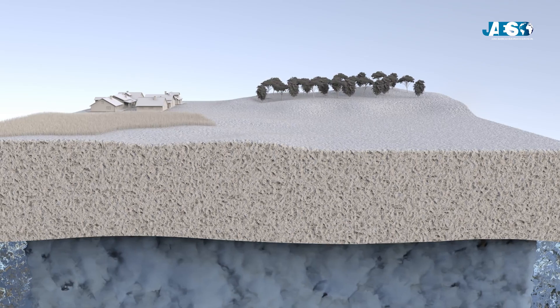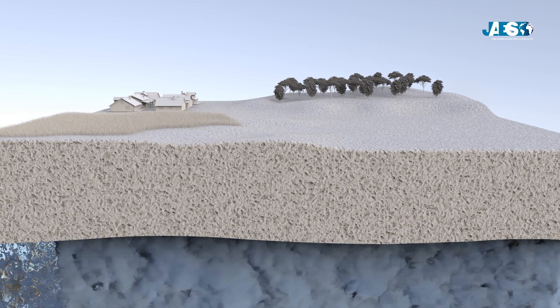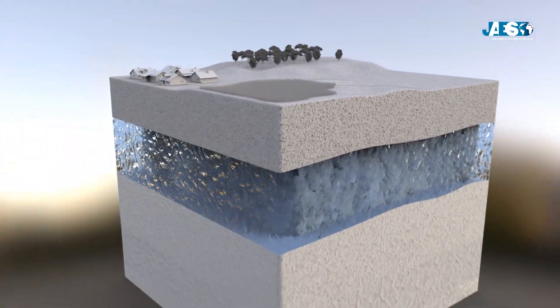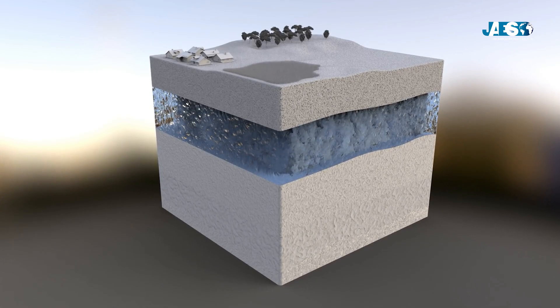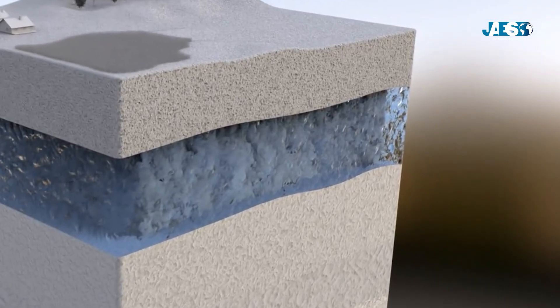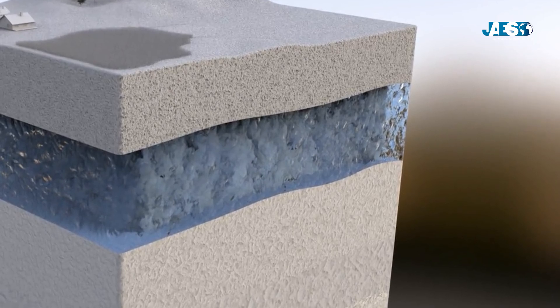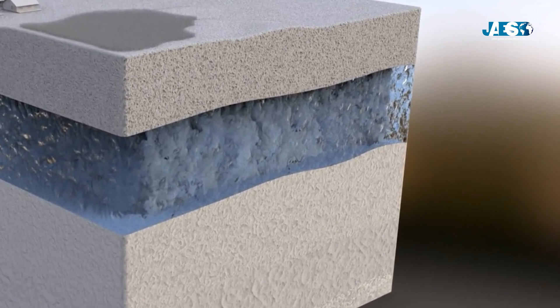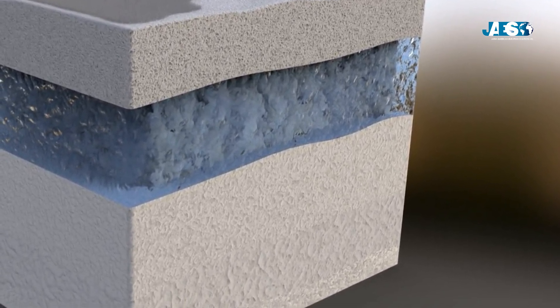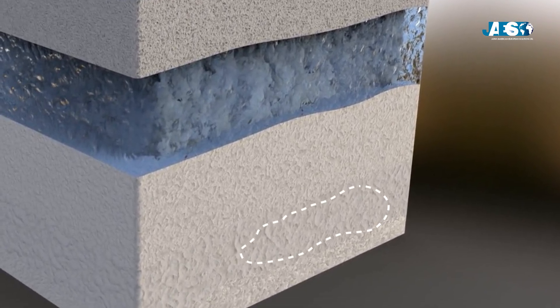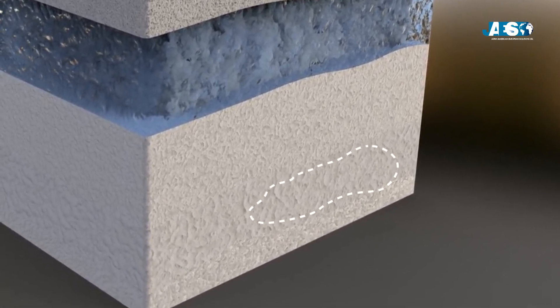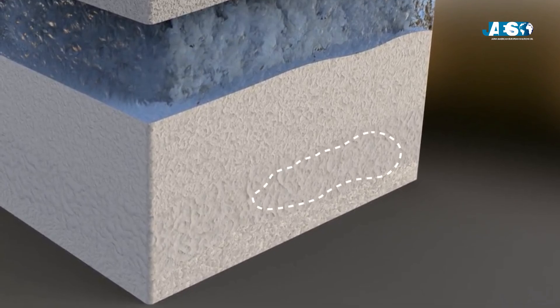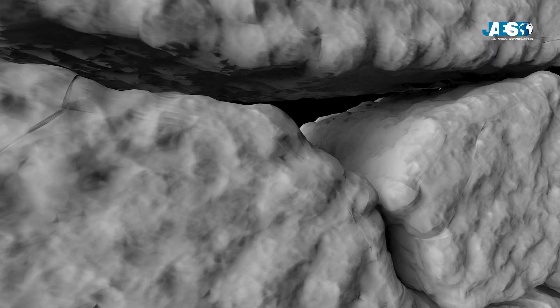Shale gas is the term used to specify this particular type of reservoir that lies at a greater depth than conventional reservoirs — beyond the aquifers, the limestone and sandstone rock layers — between two thousand and four thousand meters deep. We find segments of shale, a sedimentary rock mainly composed of mud and clay minerals.